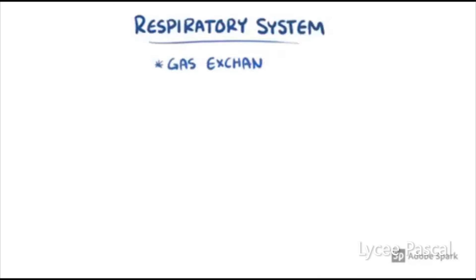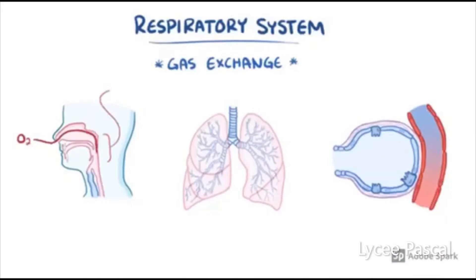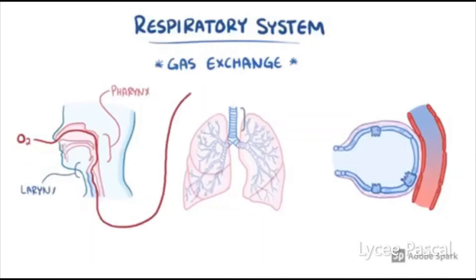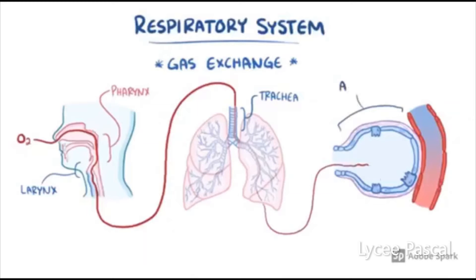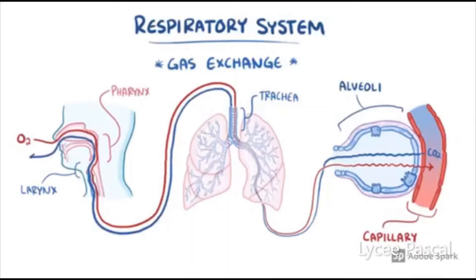In summary, the respiratory system facilitates gas exchange. Oxygen in the air is inhaled and makes its way through the pharynx, larynx, trachea, bronchus, bronchioles, and alveoli — and finally into the capillary to be sent to the body's tissues. Carbon dioxide makes the reverse journey to eventually be exhaled into the air.